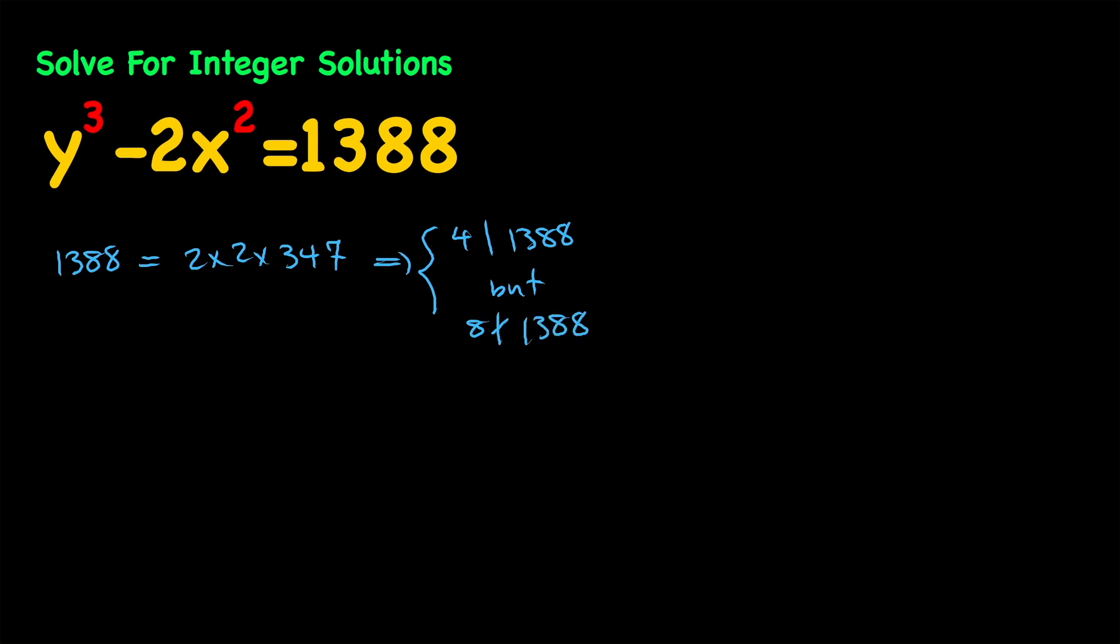We could have also gotten this from the fact that the last two digits of our number is 88 and 88 is divisible by 4, therefore 4 divides 1388. But the last three digits which is 388 is not divisible by 8, therefore 8 does not divide 1388. Either way we will have the same result and we're going to use it to solve our problem.